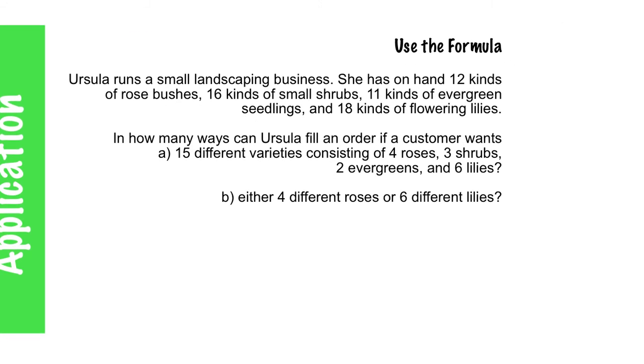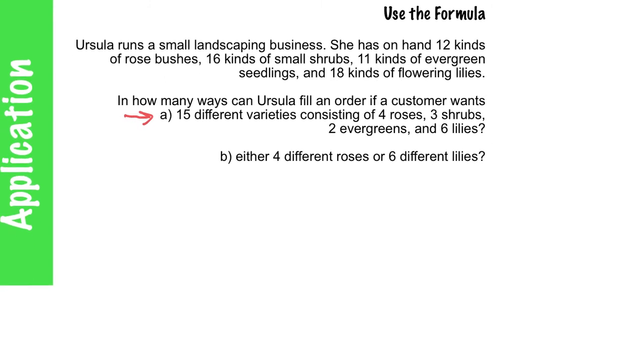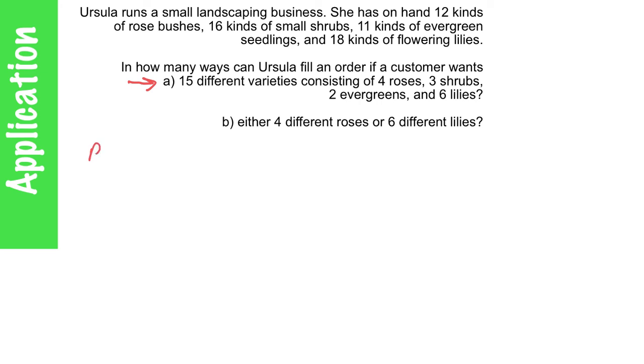Last problem. Using the formula once again. Ursula runs a small landscaping business. She has on hand 12 kinds of rose bushes, 16 kinds of small shrubs, 11 kinds of evergreen seedlings, and 18 kinds of flowering lilies. So the question becomes, in how many ways can Ursula fill an order if a customer wants, in case number one, 15 different varieties consisting of 4 roses, 3 shrubs, 2 evergreens, and 2 lilies. I like to list in short form what it is I'm dealing with. So rose bushes, I've got 12, the shrubs, 16, the evergreens, 11, and the flowering lilies, 18. So I want 15 different varieties total: 14, 3, 2, and 6.